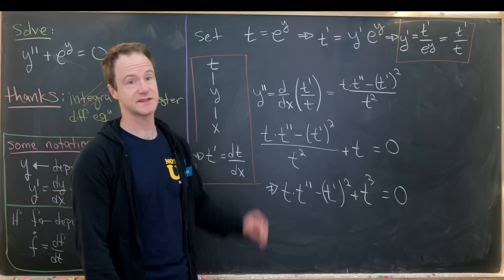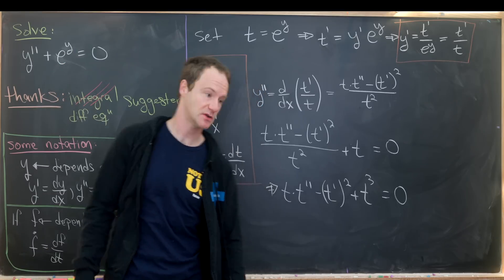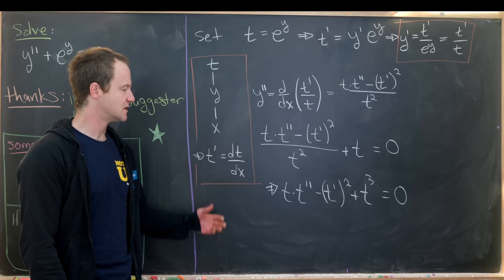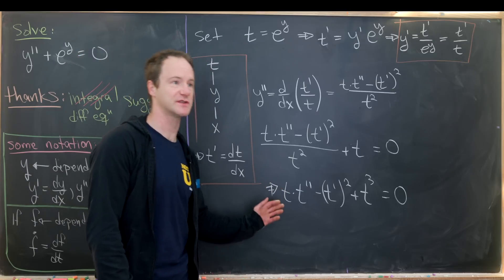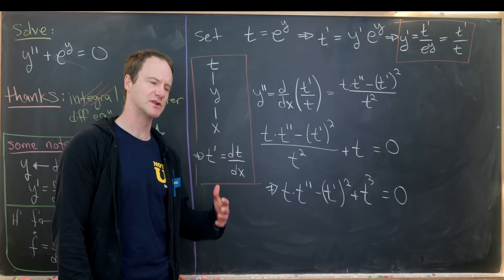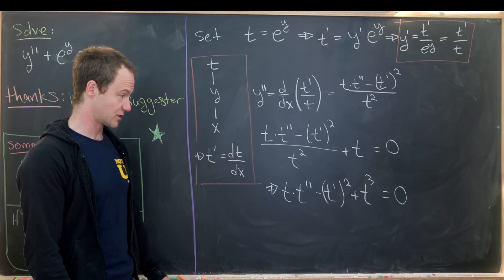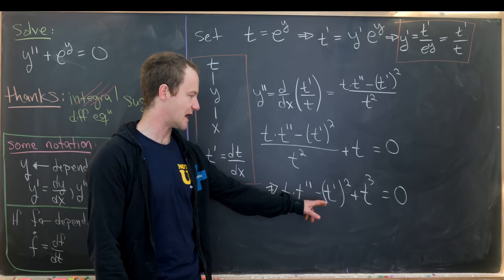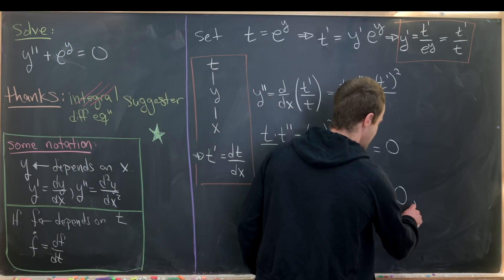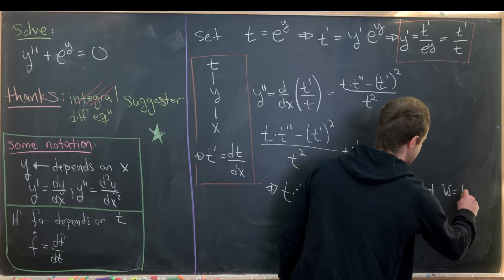As a brief summary, our first substitution took us from a second order nonlinear differential equation with a transcendental function to a second order nonlinear differential equation with only algebraic functions. Now we'd like to do a reduction of order substitution to turn this into a first order differential equation. A clear way to do that is to set a new variable w equal to t prime.